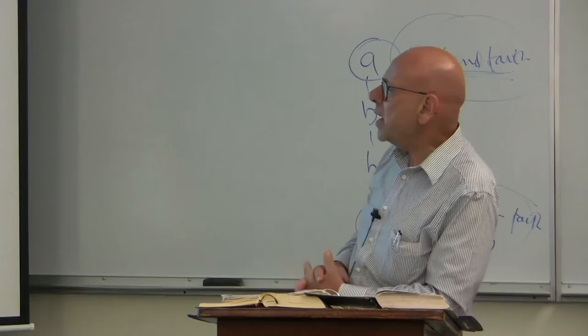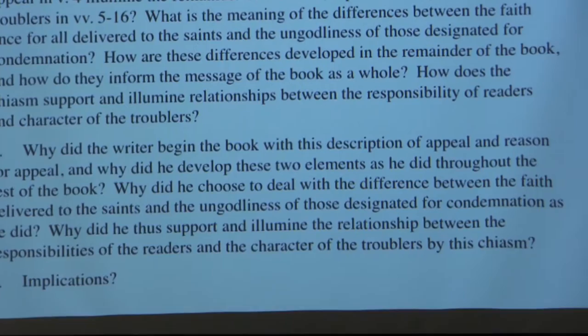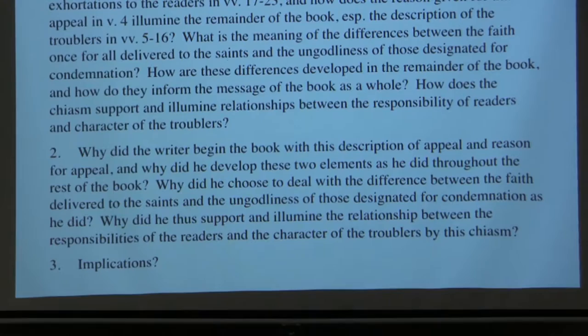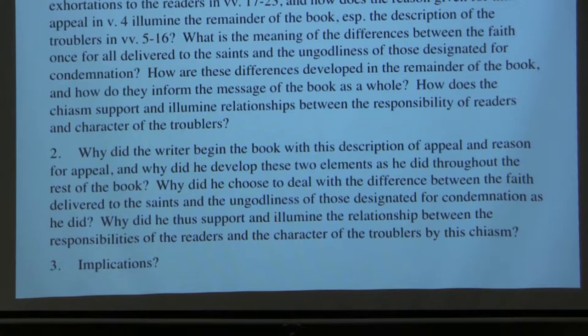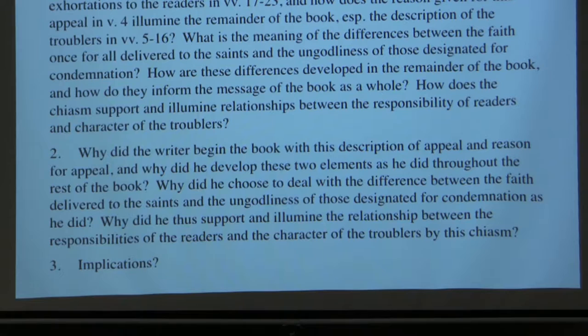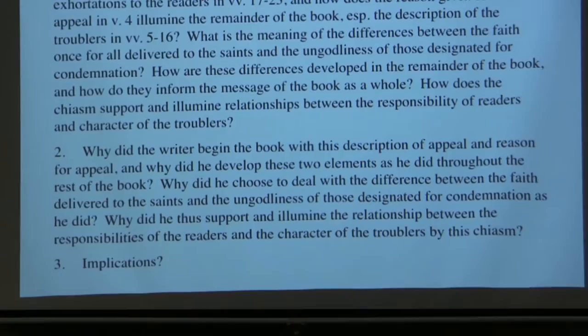Then the rational questions: why did the writer begin the book with this description of appeal and reason for appeal? Why did he discuss it in this way and use these terms? Why did he develop both the appeal and the reason for the appeal — the ungodly and their judgment — as he did throughout the rest of the book? And what are the full theological implications of the answers to all of these questions?